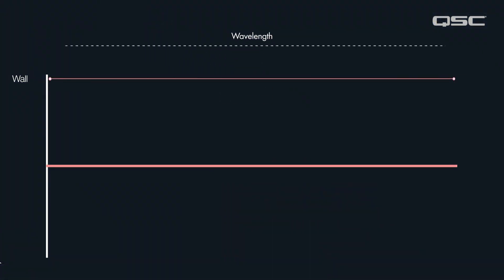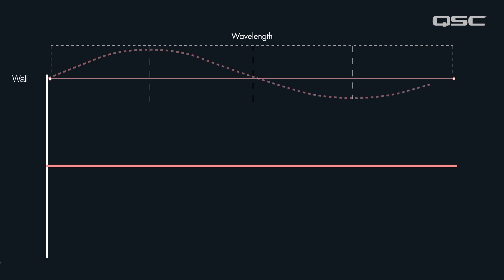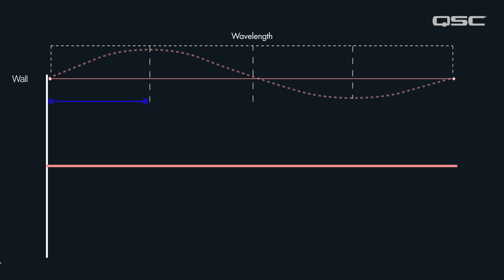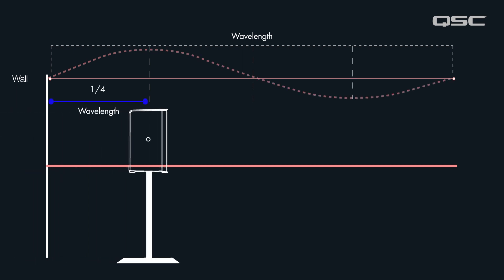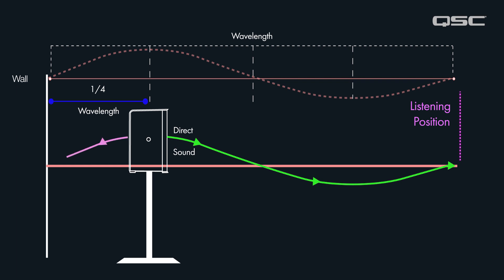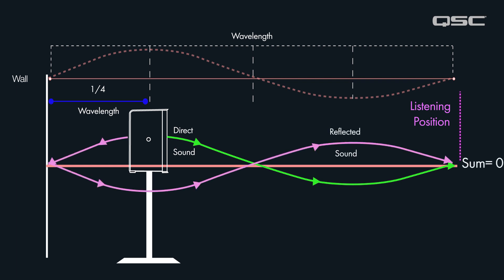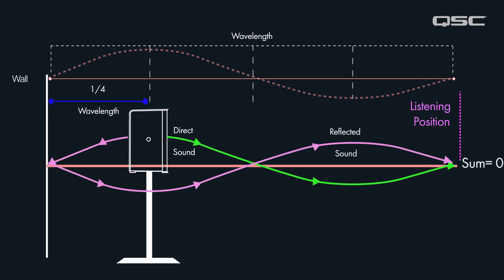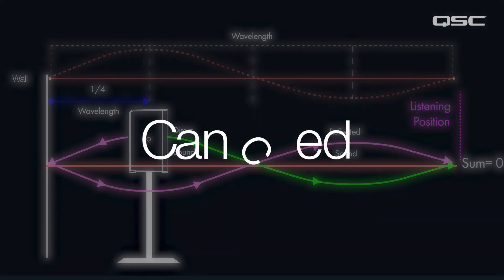At frequencies where the distance from the wall is equal to one quarter wavelength of the sound emitted, the wall reflection is out of phase with the loudspeaker's forward radiation. Hence, the sound reflected by the wall at this specific frequency will cancel the loudspeaker's forward radiation of the same frequency. It's science.